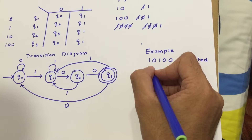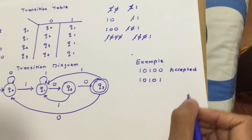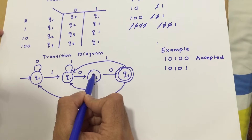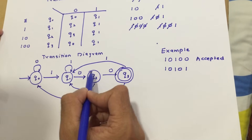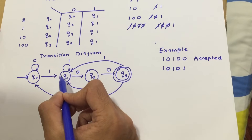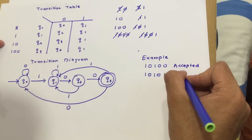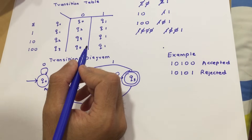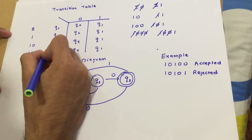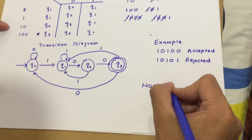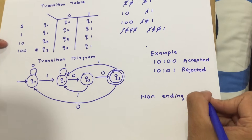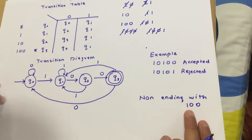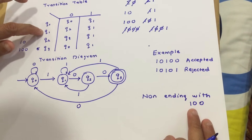Now consider a string that does not end with '100', for example '10101'. Starting at q0 — on 1 go to q1, on 0 go to q2, on 1 go to q1, on 0 go to q2, on 1 go to q1. We stop at q1, which is not the final state, so this string is rejected. Moreover, if you want strings NOT ending with '100', perform the exact same logic but make q0, q1, and q2 the final states instead of q3.